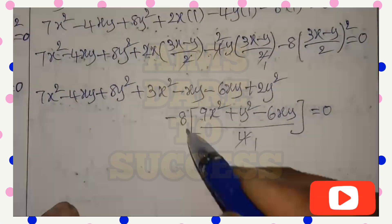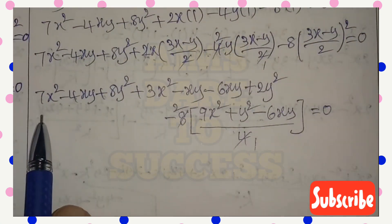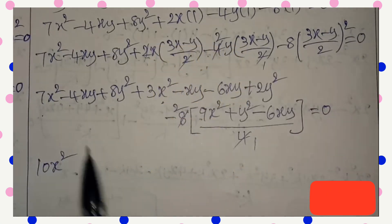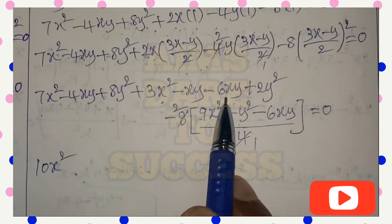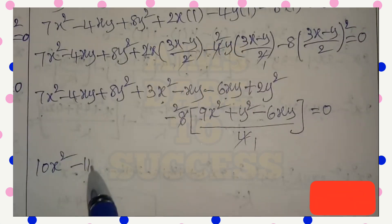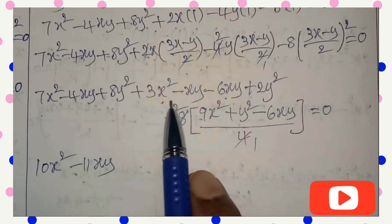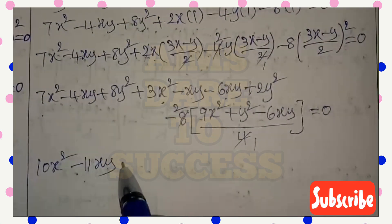Now you can take cancellation. 4 into 2. Next, 7x² + 3x² = 10x². Next xy terms: -6 - 1 - 4 = -11xy. Next y² terms: 8y² + 2y² = 10y².